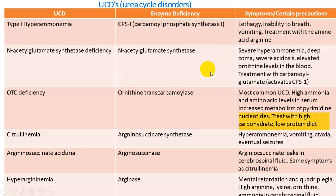Treatment is largely dietary: increasing carbohydrate intake while restricting proteins, except for essential amino acids needed for other metabolic functions. Individuals with these disorders tend not to live long and have poor quality of life. In summary, the urea cycle is a five-step pathway split between the mitochondria and cytoplasm, linked to high amino acid and high-protein diets. Its purpose is to convert ammonia into the soluble, easily excreted form of urea to prevent hyperammonemia.